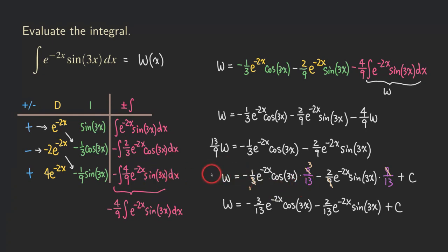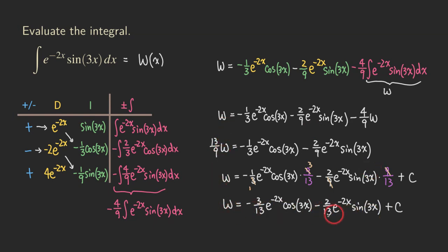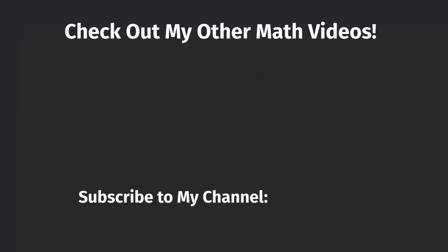I just want to point out one more thing: the reason we do integration by parts twice is that when you do it twice with this type of integrand — a product of exponential and trig — you get back to the original integral. Once you get back to the original integral, you can call it w, and even though you can't integrate it directly, you know it equals all the other terms minus 4 over 9 times w. So you just solve for w algebraically to get the answer. If you like this video, please give me a like, subscribe to my channel, and share my videos. If you have questions or a topic you'd like me to cover, please leave a comment. Thank you.